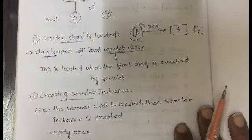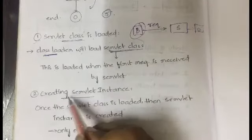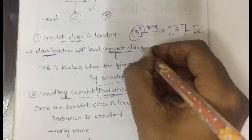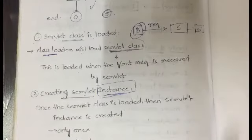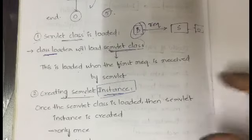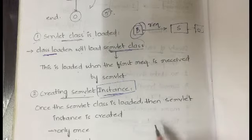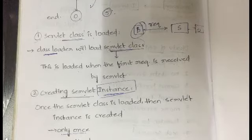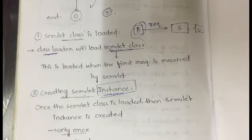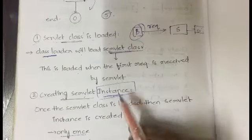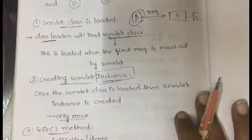After loading the class, the next step is creating the servlet instance — whatever instance is related to this class is created. As soon as loading of the class is completed, its related instance is created. Instantiation — creating the servlet instance — is done only once throughout the entire lifecycle of the servlet.